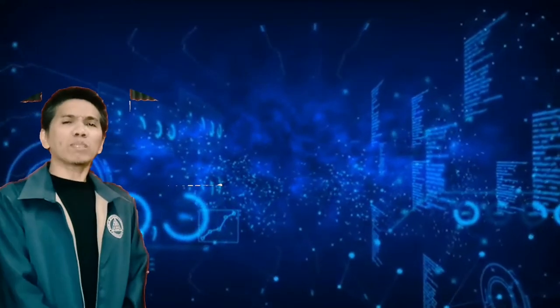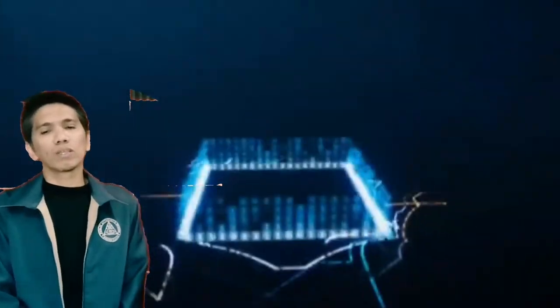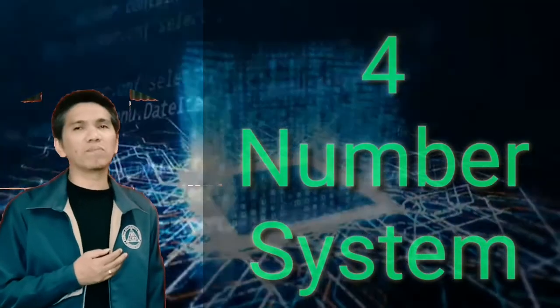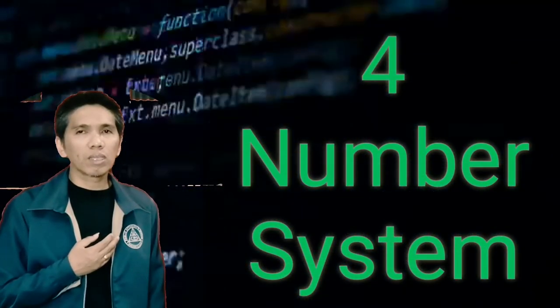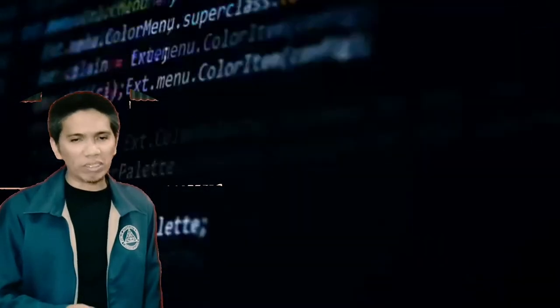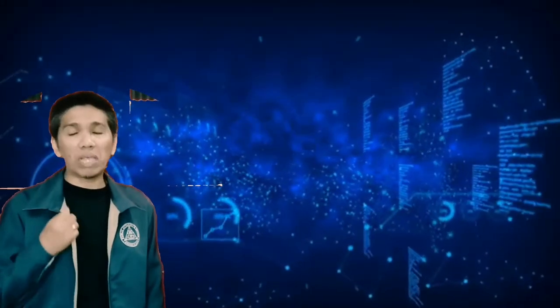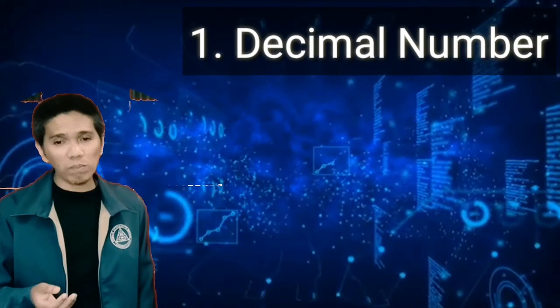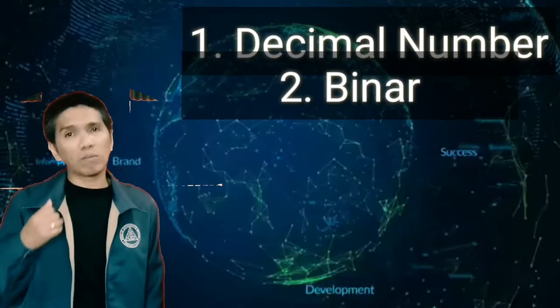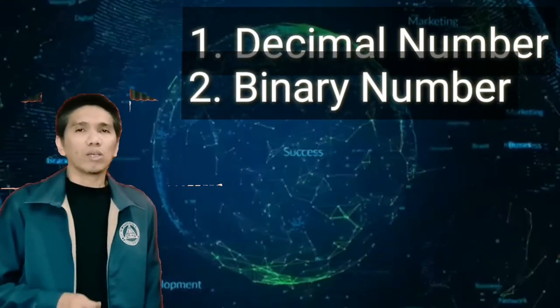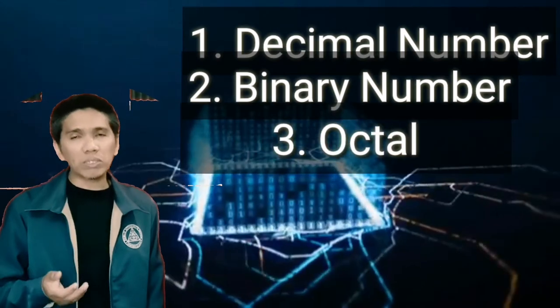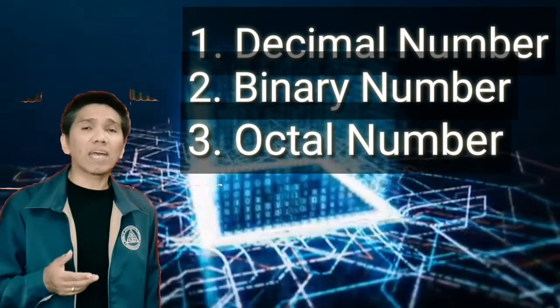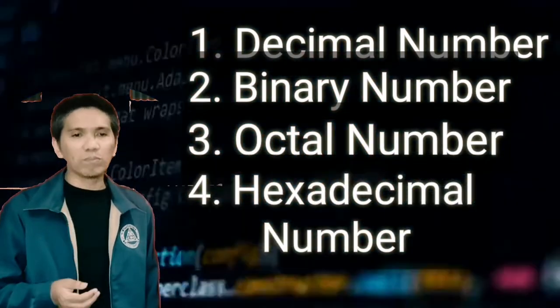Now let us proceed to our main topic of this module: the number system. We have four number systems in digital electronics: the decimal number system, the binary number system, the octal number system, and the hexadecimal number system.